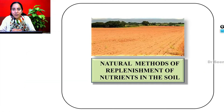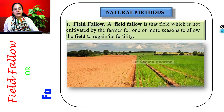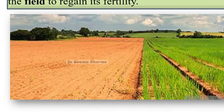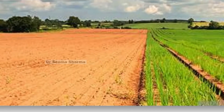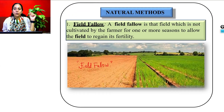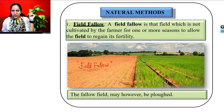The first natural method is field fallow. A field fallow is a field that is not cultivated by the farmer for one or more seasons to allow it to regain its fertility. In the picture you can see two fields — one with a growing crop and another completely empty. The farmer is not growing crops on one part of the land for one or more seasons in order to allow the field to regain its fertility naturally. The farmer may still plow and maintain the fallow field.